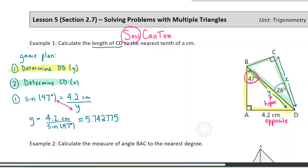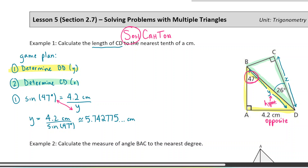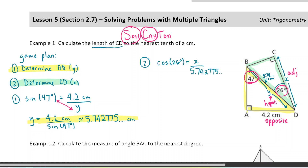I like to keep that value in my calculator so I can use it directly in the next step — I just leave it there. That was step one, finished. Now for step two I'm going to use the green triangle. I know that length is about 5.7 centimeters. Labeling the sides: this is the adjacent side and this is still the hypotenuse. So this time I'm going to use the cosine ratio. Cosine of 26° equals the adjacent side X over 5.742775.